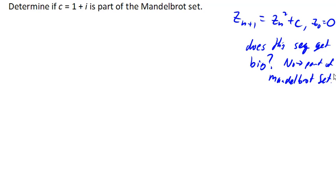So let's start with z equals 0 and see what happens with this value for c. z_1 would be z_0 squared plus 1 plus i, or in other words, 0 squared plus 1 plus i would be 1 plus i.